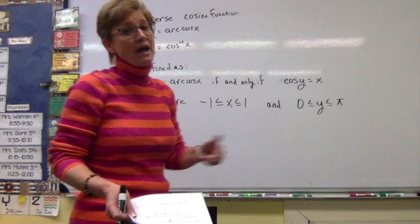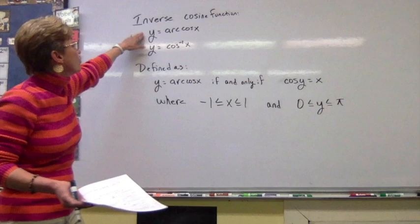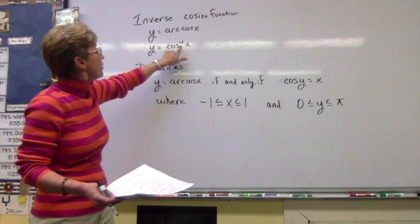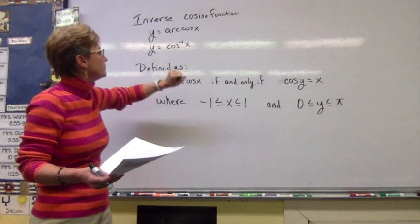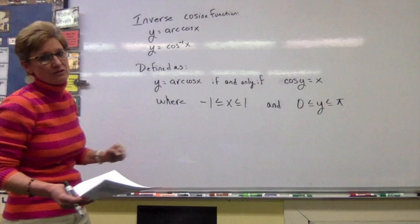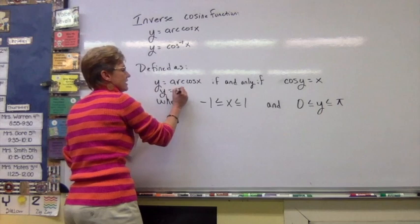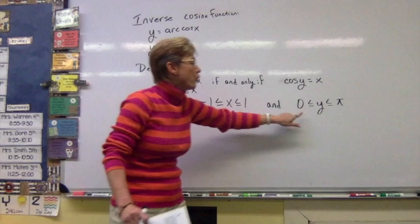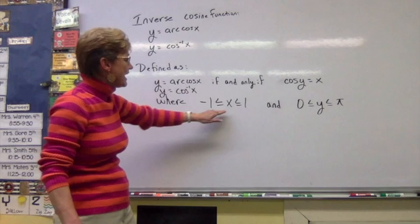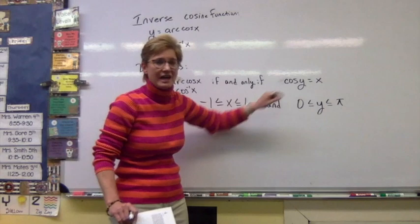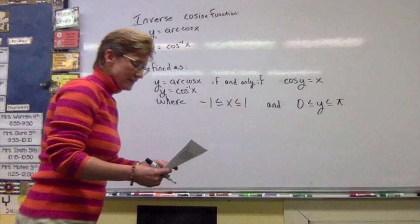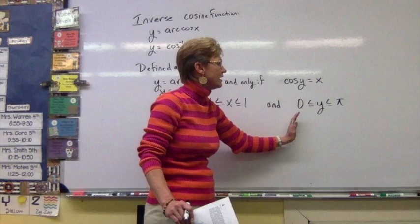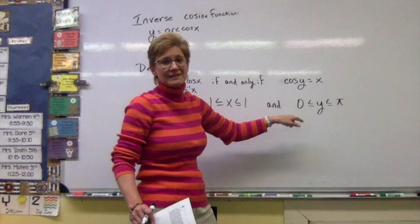Now we're going to look at the inverse cosine function. Our notation looks like y equals arc cosine, or y equals cosine with the inverse notation of negative one as an exponent — which we know doesn't mean an exponent of x. The most important thing to understand: y equals arc cosine, or y equals cosine inverse of x, if and only if cosine of y equals x, where x is between negative one and one and y is between zero and pi. The reason y is restricted is so the graph passes the horizontal line test.